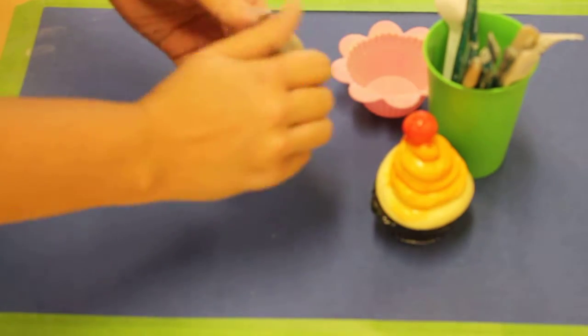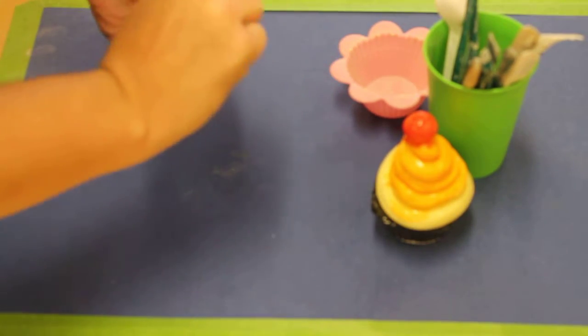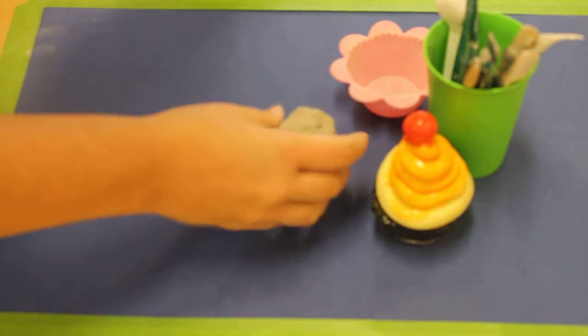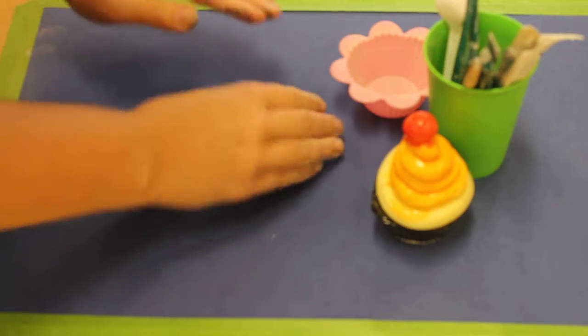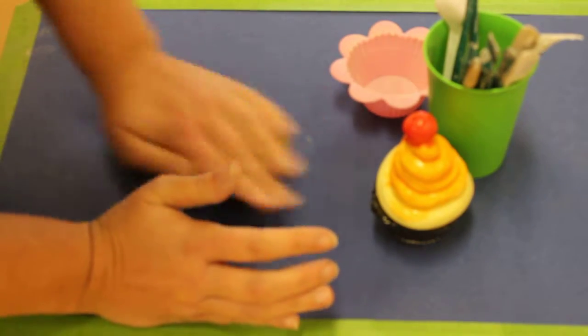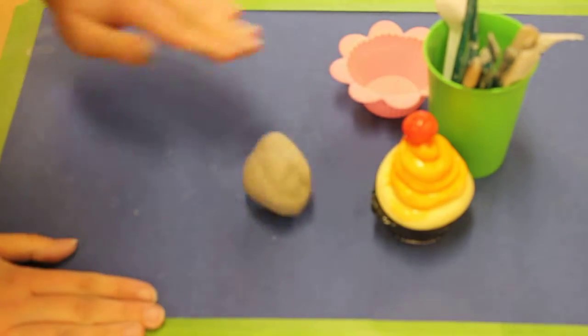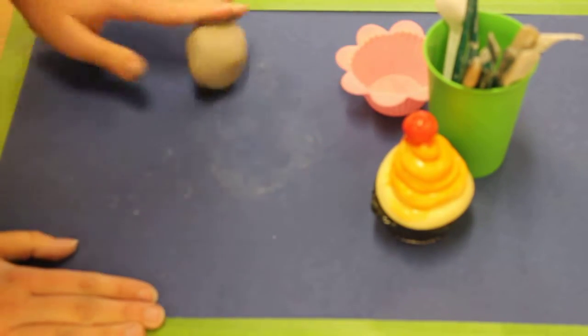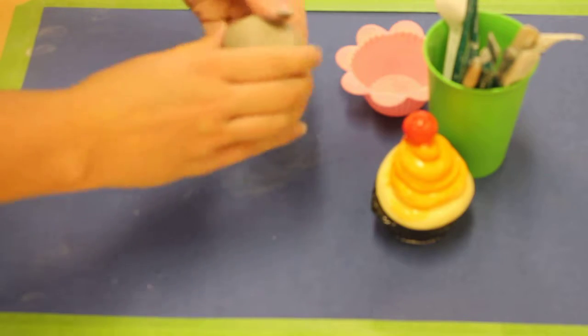So I'm going to start off with some clay. I'm going to make my piece a little bit bigger than a golf ball. I'm going to roll it out until I have a circle.